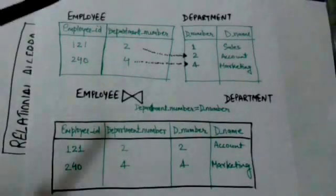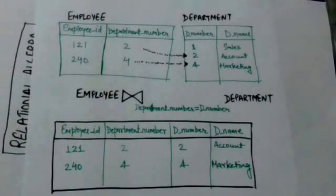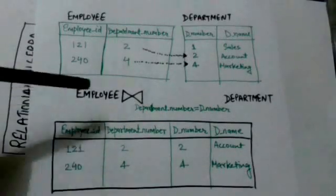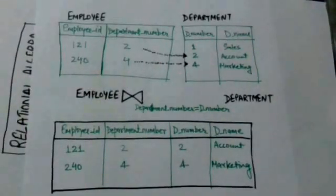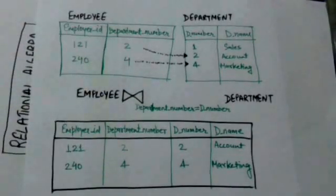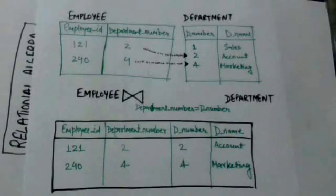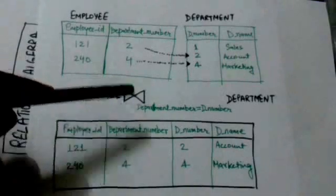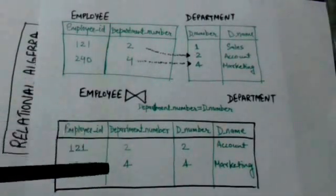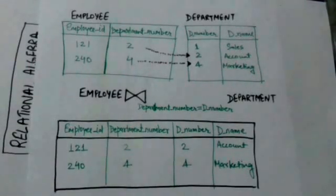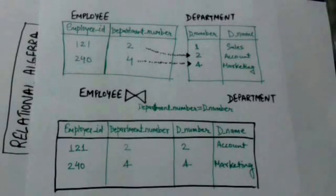For example, see this employee relation. It has two attributes: employee ID and department number. This is the department relation. Now see this join operation. The join condition of this join operation is that the value of the department number attribute of the employee relation must be equal to the value of the D number attribute of the department relation. The result of this join operation is this relation. Each tuple of this resulting relation is formed by combining a tuple of relation employee with a tuple of relation department in such a way that the combination satisfies the given join condition.